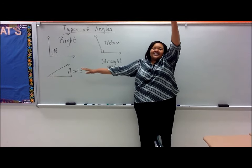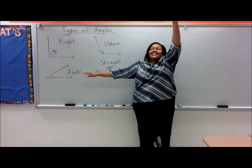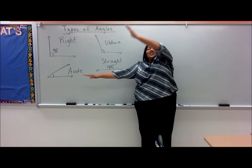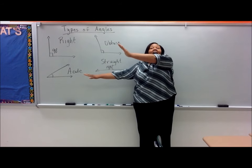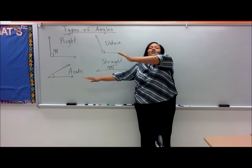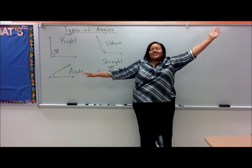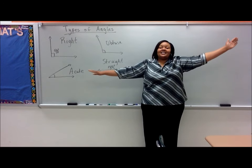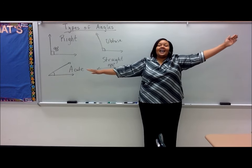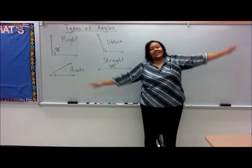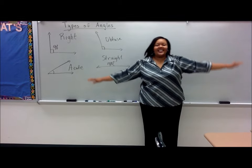Right angle, it is 90 degrees. We say acute angle, less than 90 degrees. We say obtuse angle — more than 90 degrees. And a straight angle is 180.